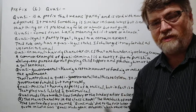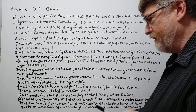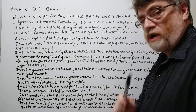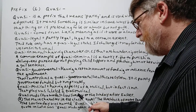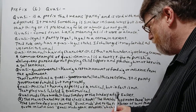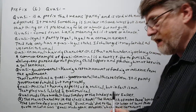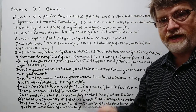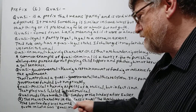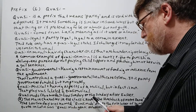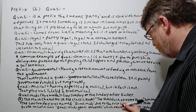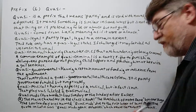Now, Quasimodo — we have two meanings for Quasimodo. As two words, it refers to what we sometimes call Low Sunday, the Sunday after Easter. The second meaning is the main character in the classic novel The Hunchback of Notre Dame by Victor Hugo.